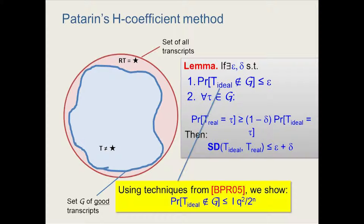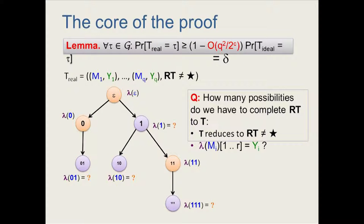The hard part is the second part of the proof: showing that the probability of getting a good transcript in the real world and in the ideal world are close — related by a factor of 1 minus delta, where delta is essentially Q squared over 2 to the C. The key problem is: given a real-world transcript with a reduced message tree that is not degenerate, how many ways can you complete this reduced message tree into a full message tree without making it degenerate, such that the new labels are consistent with the actual outputs of the construction? This is inherently a counting problem, which is the core of the proof. There are some hidden higher-order terms and assumptions about well-behaved labels, but everything worked out in a somewhat painful way.